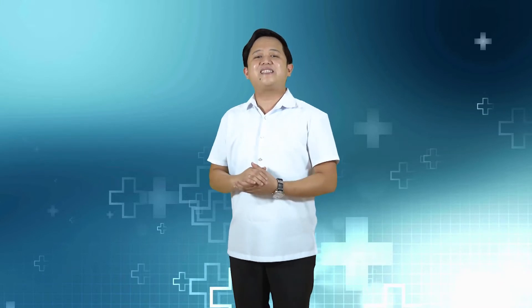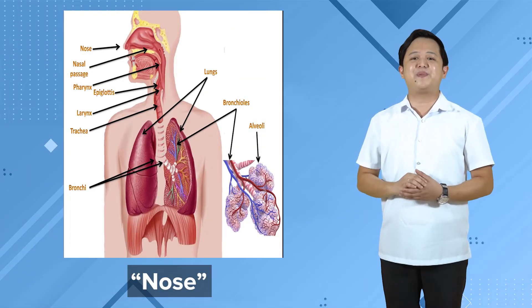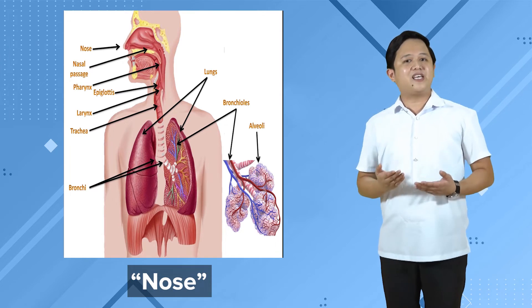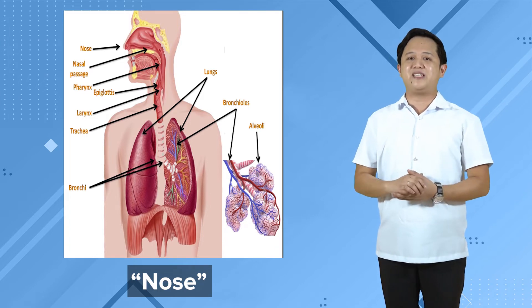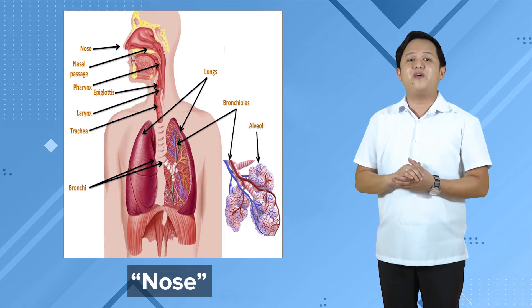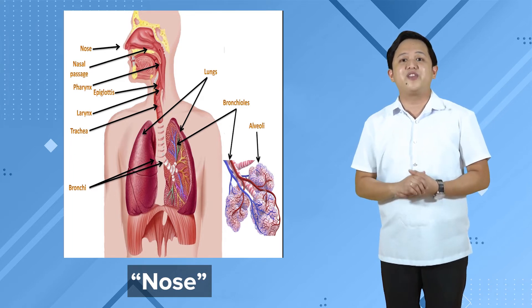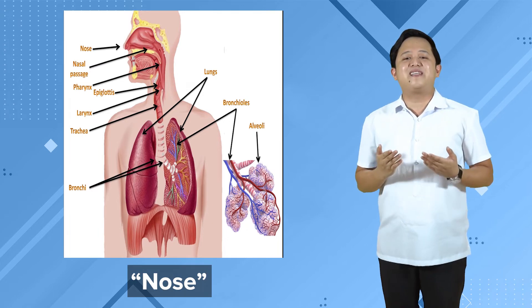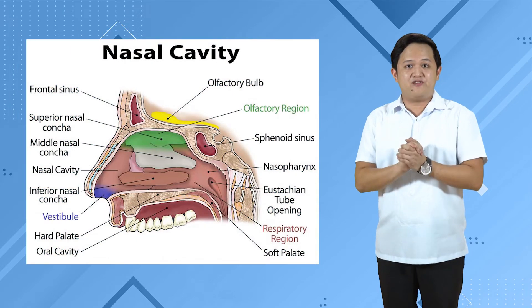To understand better how the respiratory system works for gas exchange, let's look at the respiratory organs in detail. The nose is the gateway of the respiratory system — oxygen enters the body via the nose. The nasal cavity is lined with tiny hairs called cilia, which trap foreign particles and sweep them toward the throat. Mucous membranes warm and moisten the air while trapping foreign materials.